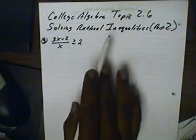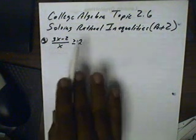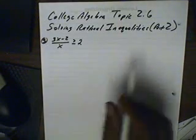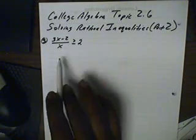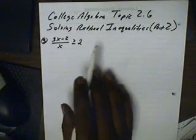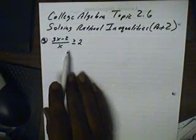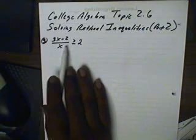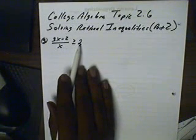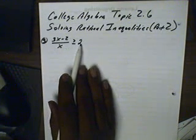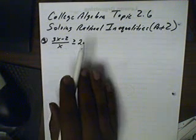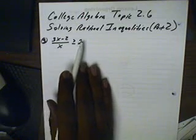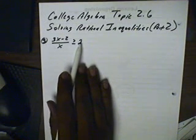College Algebra Topic 2.2, Solving Rational Inequalities, Part 2. This time we have a rational inequality, but it has not been set to zero — there's a 2 on the other side. So our first job will be to make sure this is all set equal to zero.